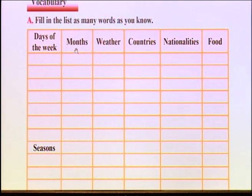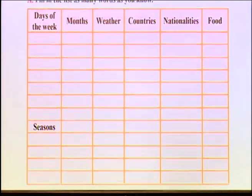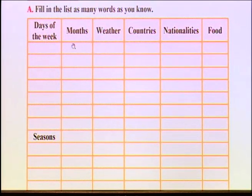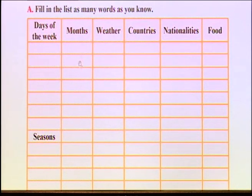Months — months of the year. How many months do we have in a year? Great, twelve. Can you write them here? The first month of the year is January, February, March... I won't say the rest — you should fill in the chart yourselves. Write down what you remember.